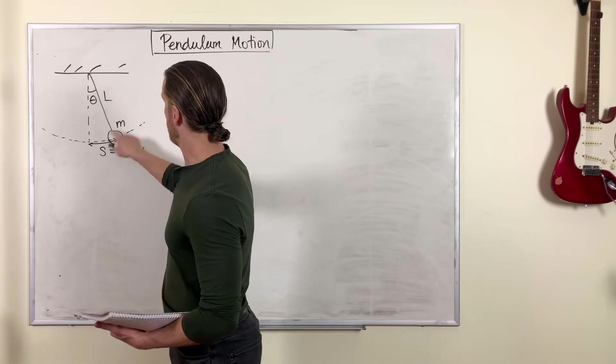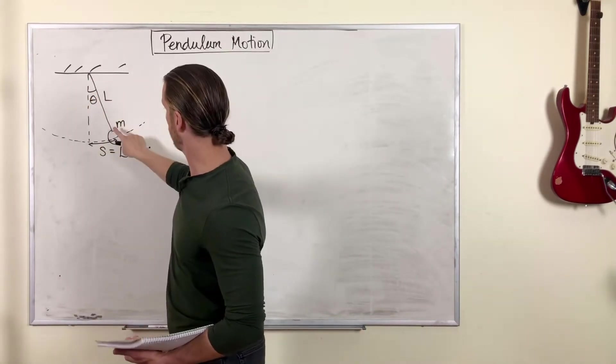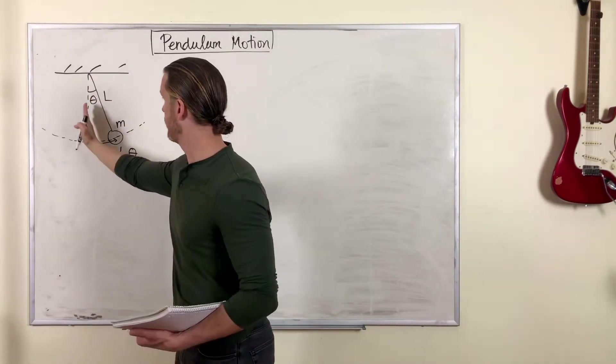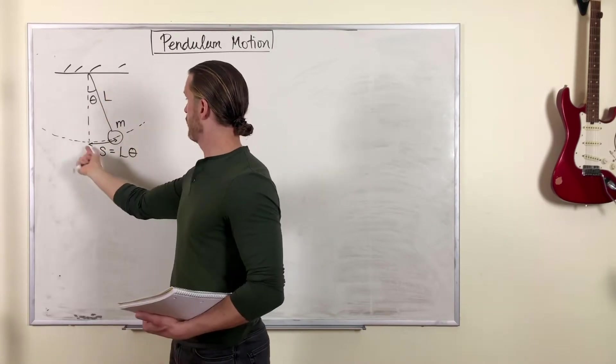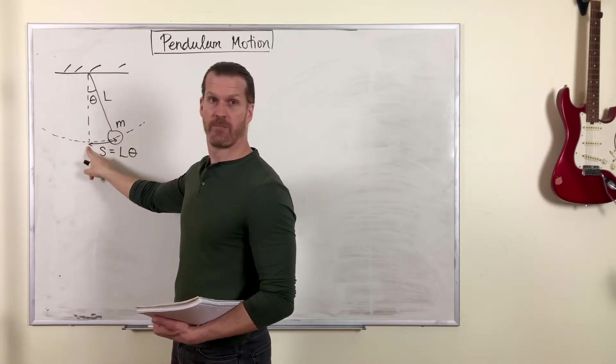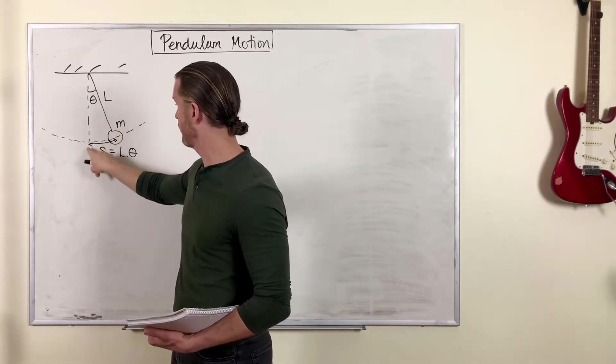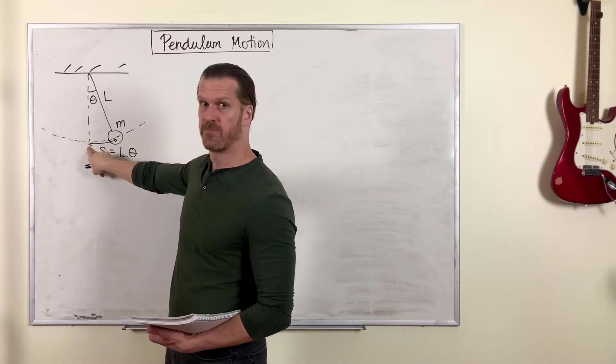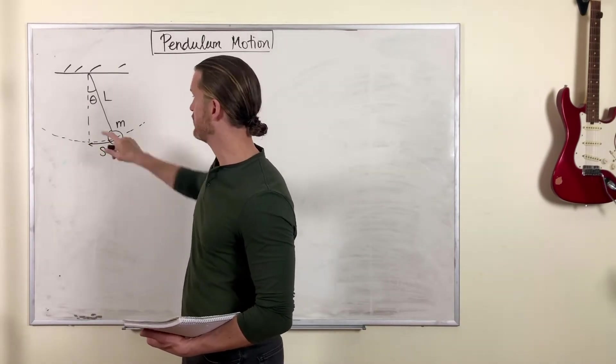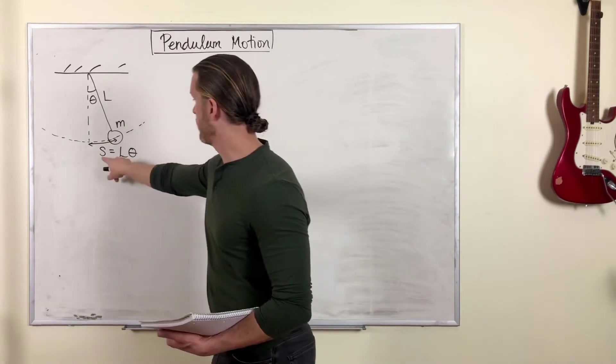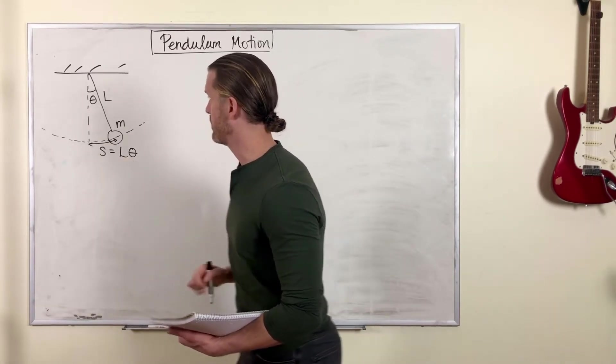So here's a sketch of our pendulum. There's a string, there's a mass, we've deflected it by an angle theta. So you can describe the arc length s from the bottom undeflected position to the location where the pendulum's at. That arc length is l times theta.